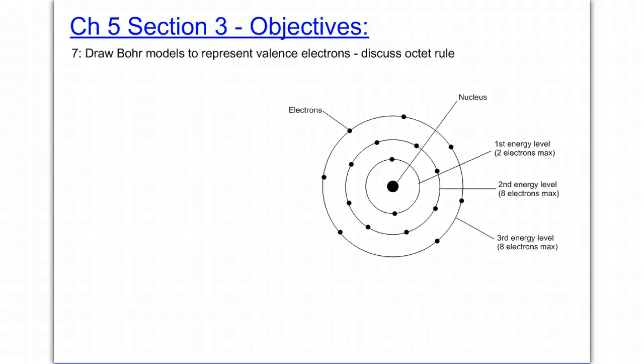Chapter 5, Section 3. Your objective is to draw Bohr models to represent valence electrons and discuss the octet rule.